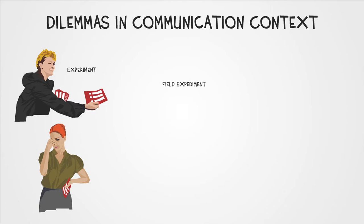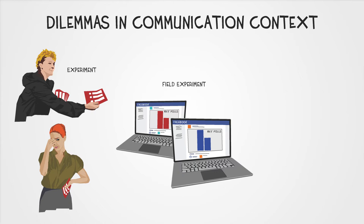In so-called field experiments, this becomes even more problematic. In 2010, researchers exposed 61 million Facebook users to different versions of advertisements to encourage them to vote during the US elections. This gave some unique insights into what persuades people to go to the voting booth. But even beyond the question of whether the users really consented to being participants in such experiments, it can be potentially very problematic if such studies do, in fact, influence voting outcomes.